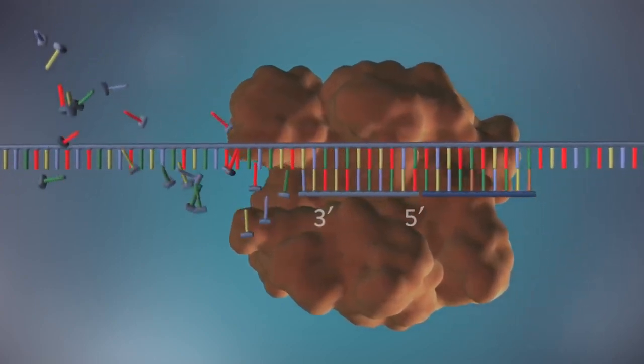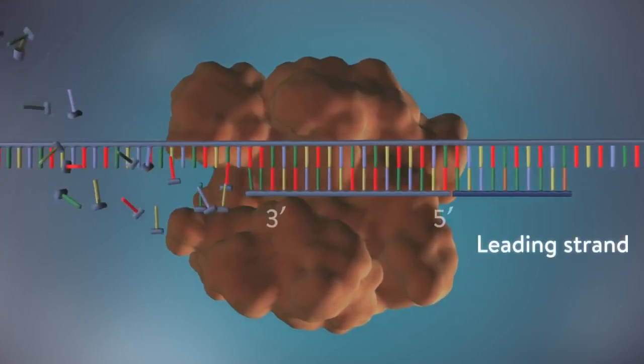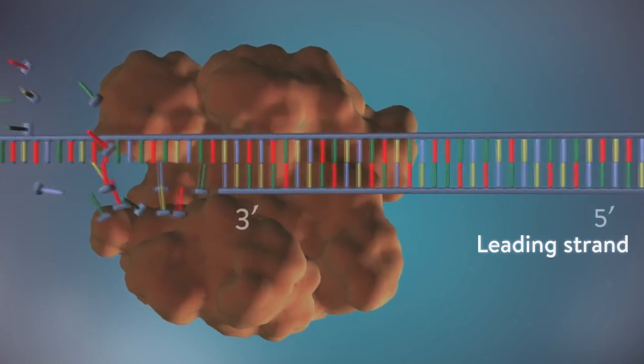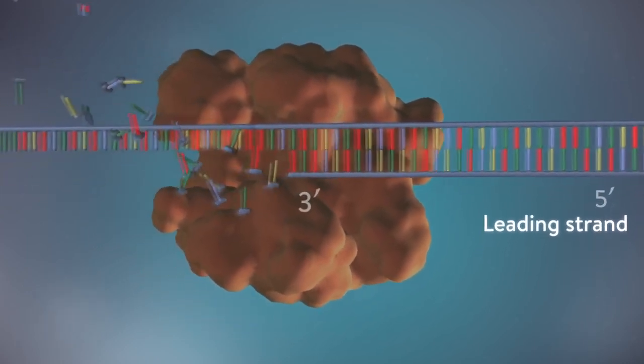One of the new strands of DNA, the leading strand, is made continuously, the DNA polymerase adding bases one by one in the 5' to 3' direction.